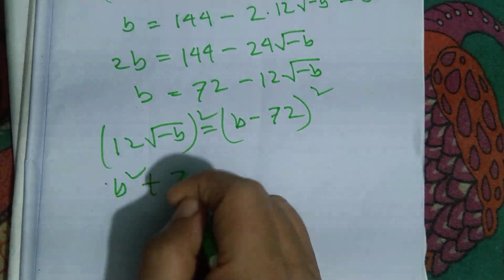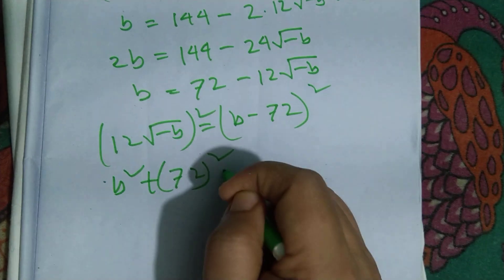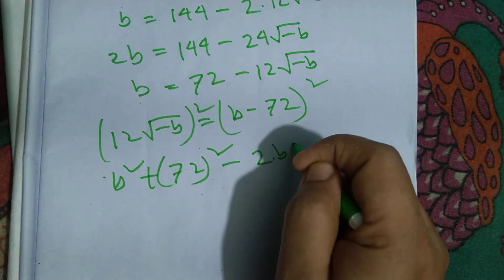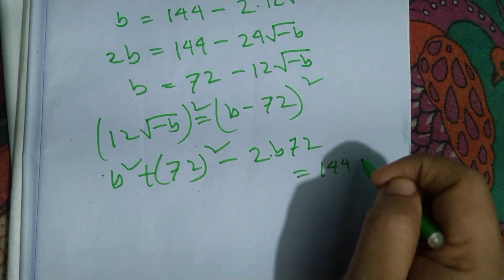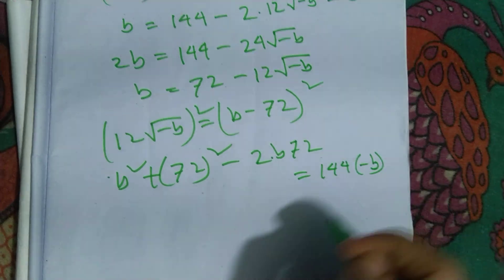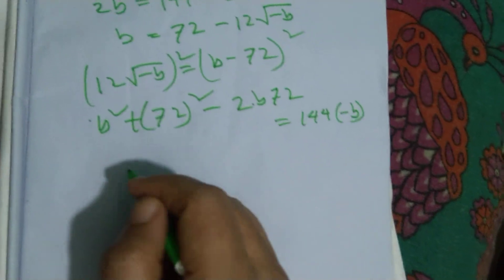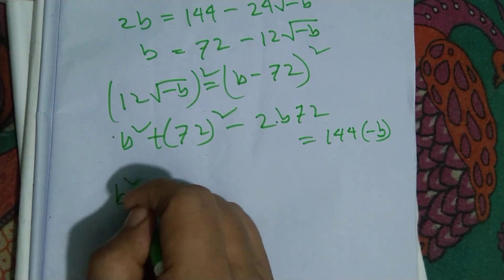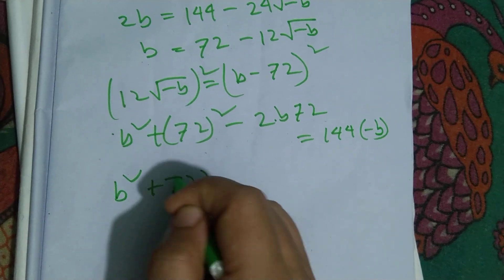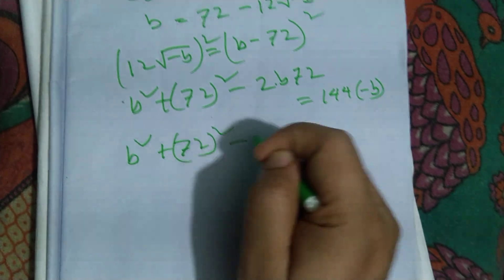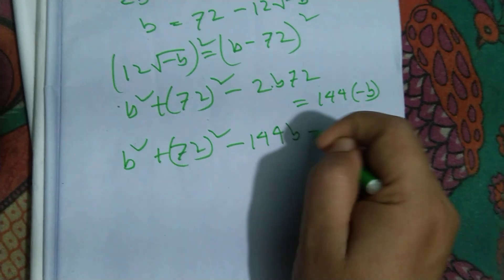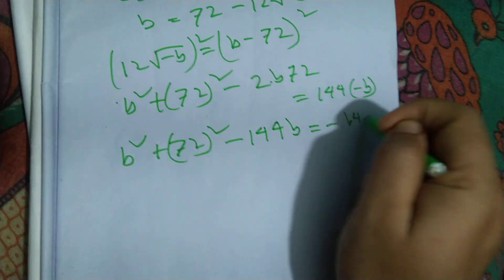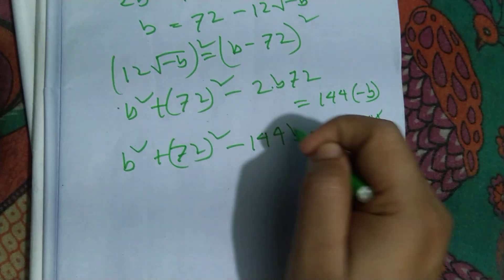This is equal to 144 minus B. So it is B square plus 72 whole square is equal to minus 144 into B, minus 144. So it is cut.